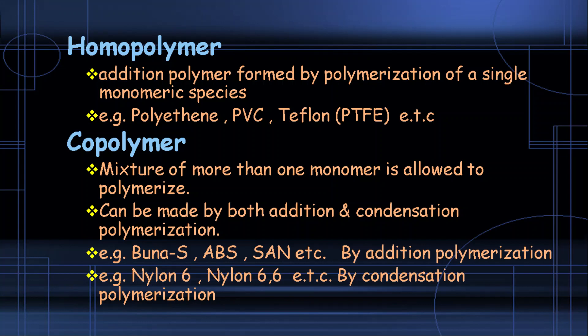A homopolymer is formed from a single monomeric species or single monomeric units. A copolymer is a mixture of two or more monomeric units. Examples of copolymers include Buna-S (BUNOIS), SAN, and ABS.